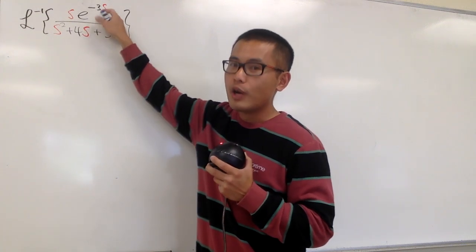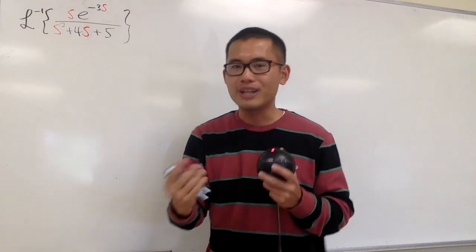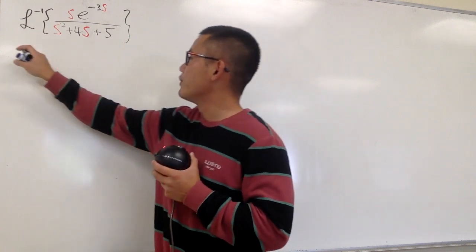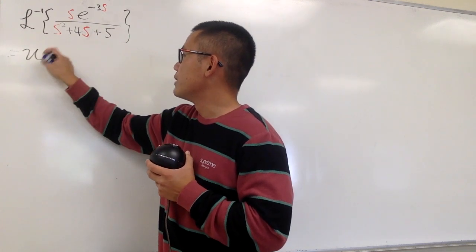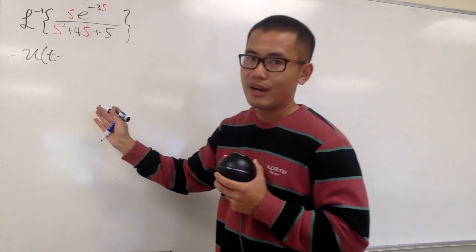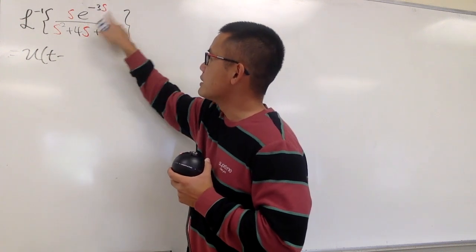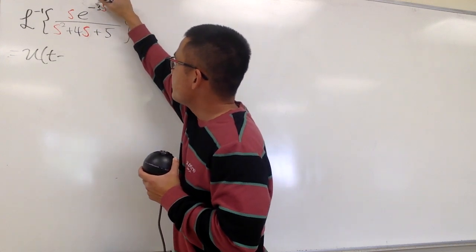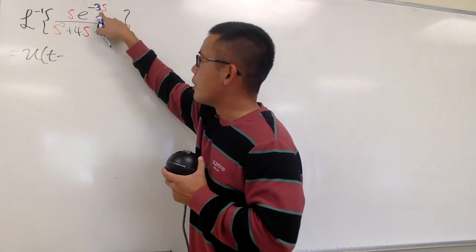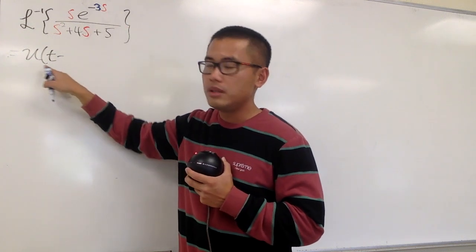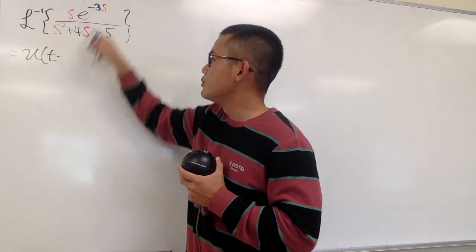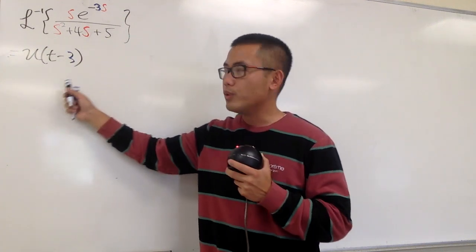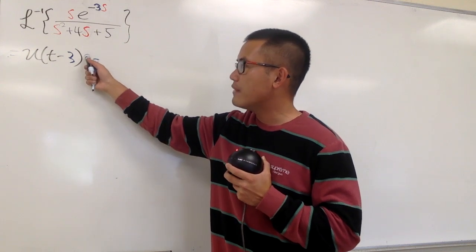This means when I go back to the t world, I must have a unit step function. So let's put down u of t minus whatever. We have negative 3s, so we are going to pay attention to the number 3. That will tell me the unit step function is going to be u of t minus 3. We also have to have the function f of t minus 3.